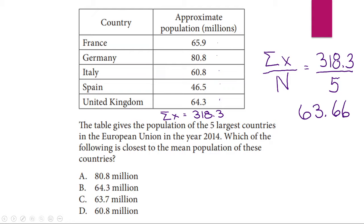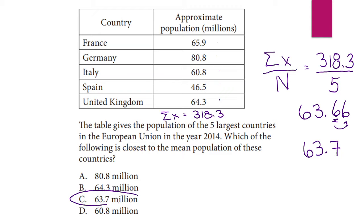Now there's not a 63.66 here. We have to round our answer to the tenths place. So remember, that means we're going to look at the guy next door — if he's 5 or more, round up; if not, keep it the same. So our answer in this case becomes 63.7, which means c would be our answer.